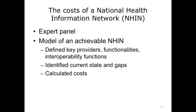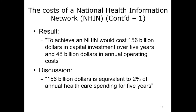An expert panel was convened to estimate the financial investment necessary to create a national health information network. They identified relevant providers, interoperability needs, goals, current state, gaps between current state and an ideal status, and the necessary funding to address those gaps. The result was that achieving a national health information network would cost $156 billion in capital investment over a five-year period and $48 billion in annual operating costs. The authors noted that $156 billion is equivalent to only 2% of annual health care spending for five years — so compared to the total cost of health care, this may not be as exorbitant as it first seems.